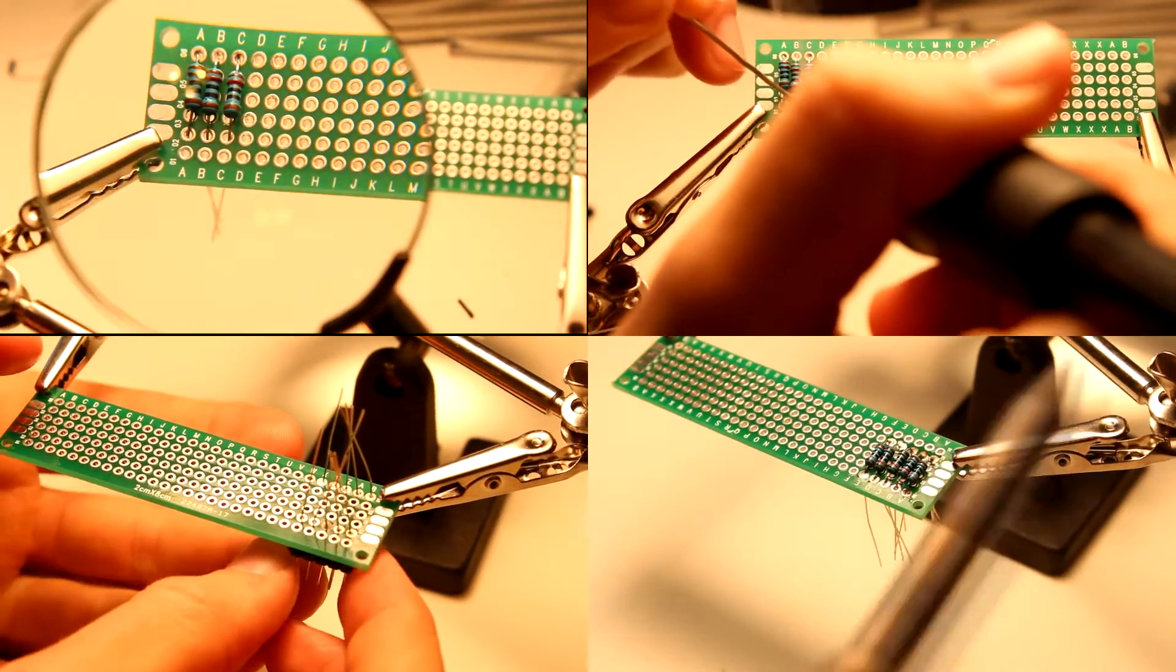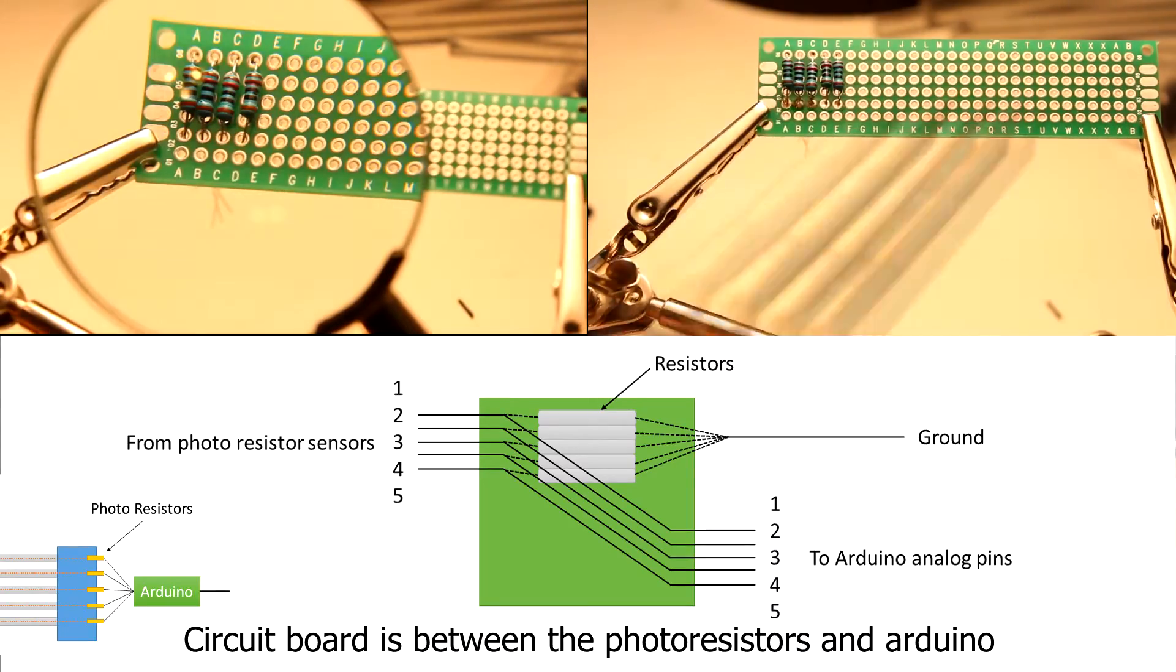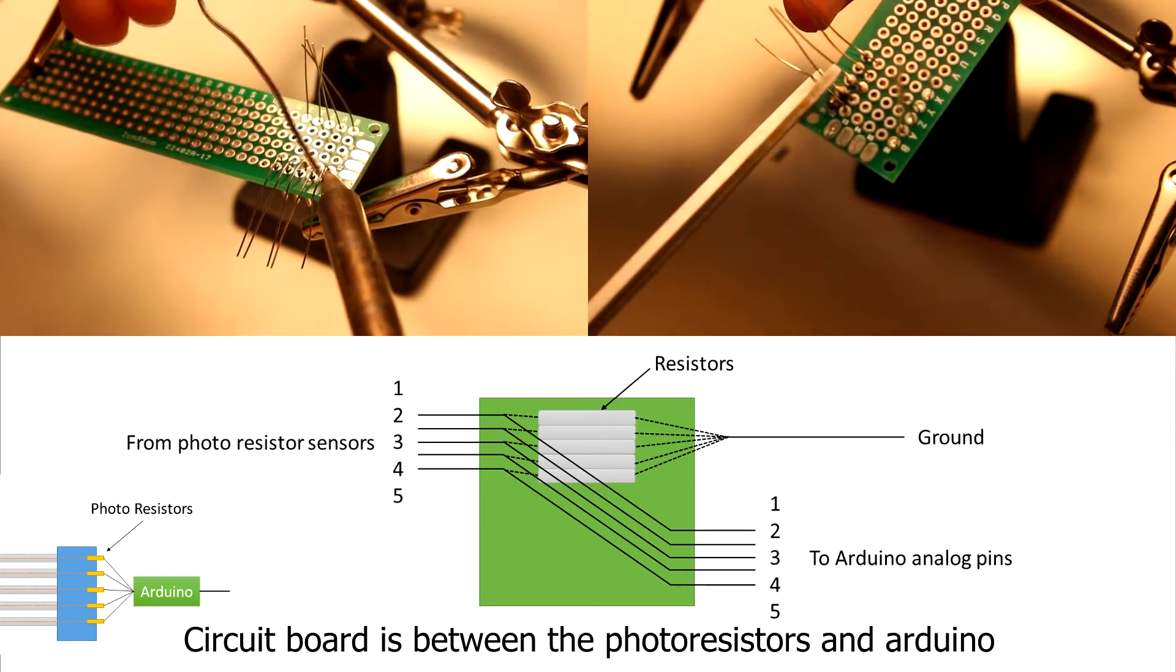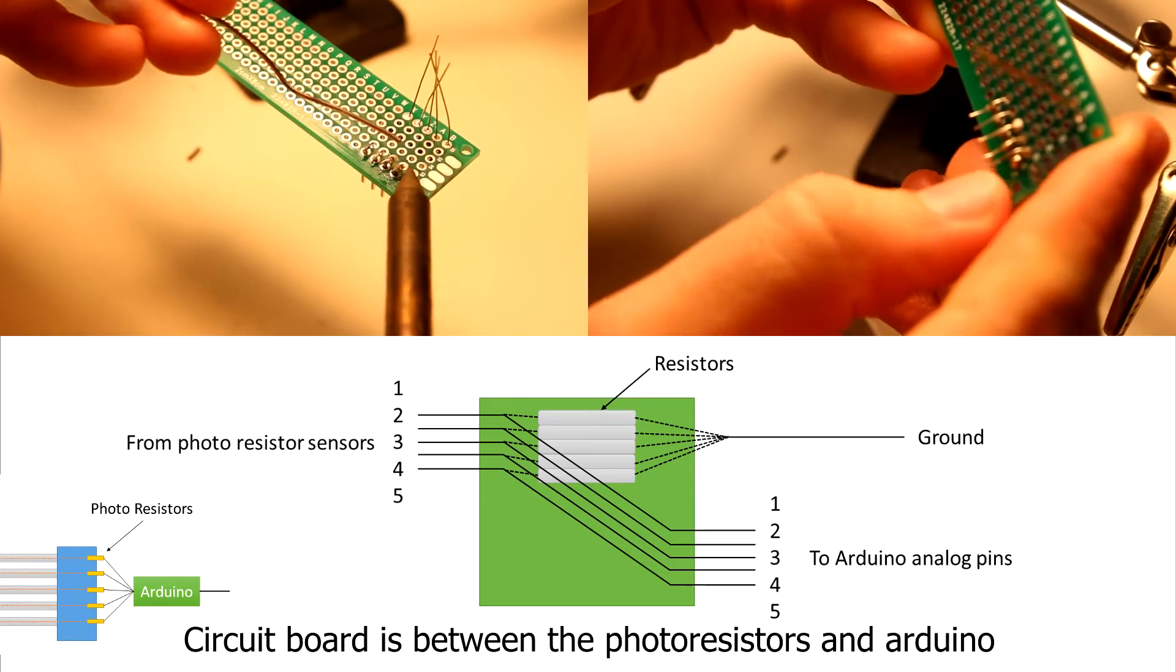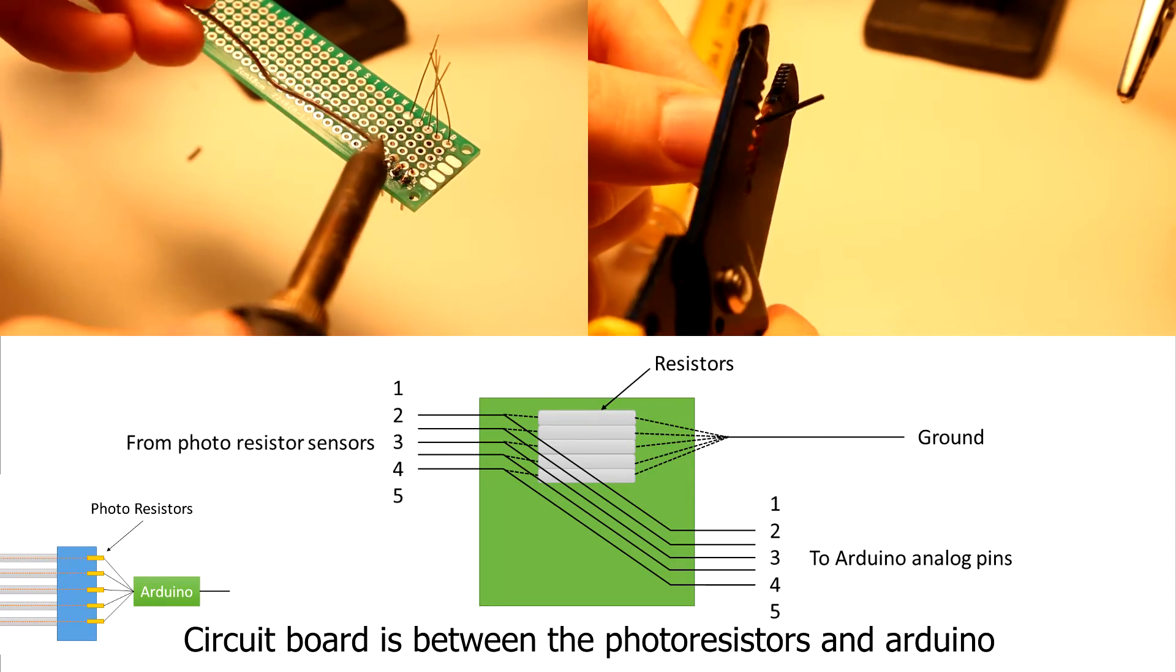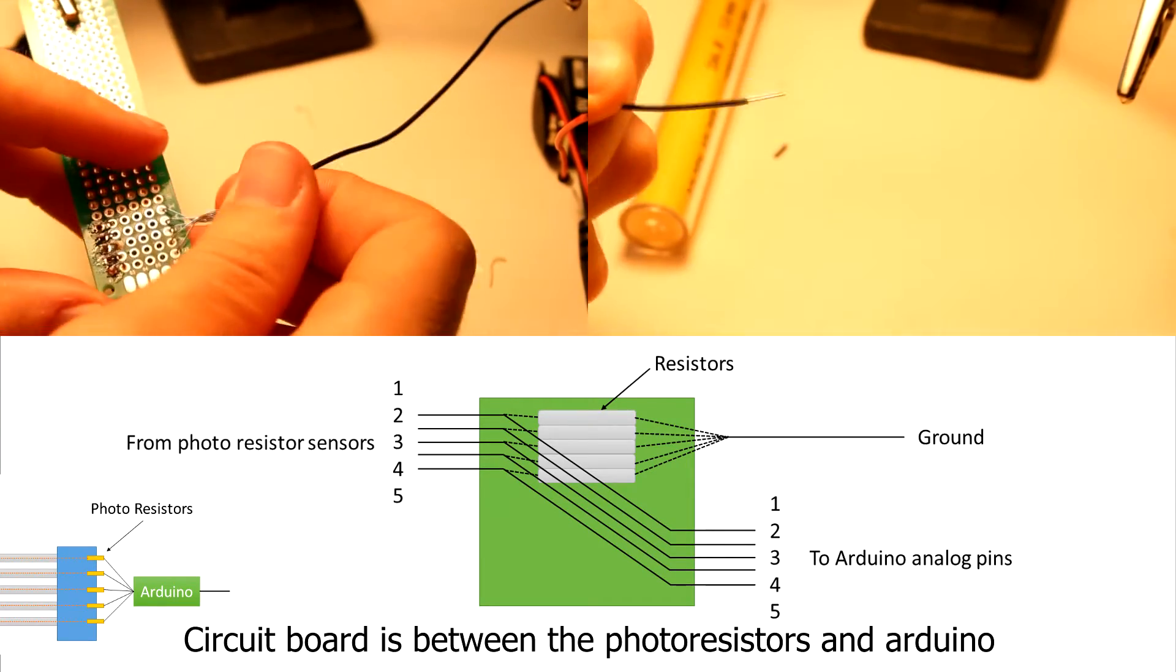Now to split the signal coming from the photoresistors, I used a circuit board that I made using 120 ohm resistors and this diagram there to split the signal coming in to the Arduino pins and the ground.